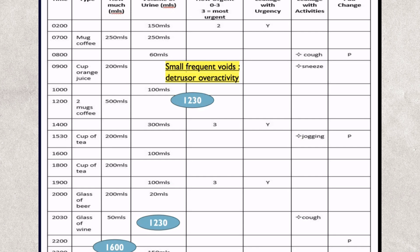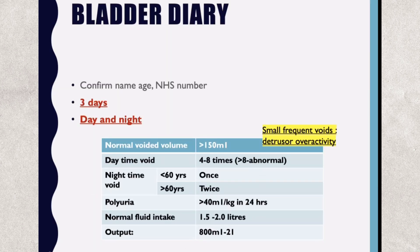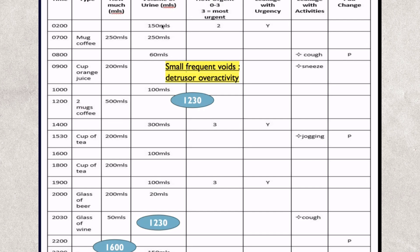This is how a bladder diary looks. When the patient comes with it, you can see entries at 2 a.m., 7 a.m., 8 a.m., 9 a.m., and so on. Counting daytime voids from 7 a.m., she has one, two, three, four, five, six, seven — more than eight, which is abnormal. At night she has only woken up once at 2 a.m.